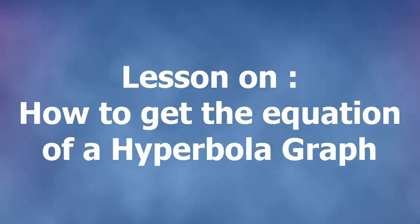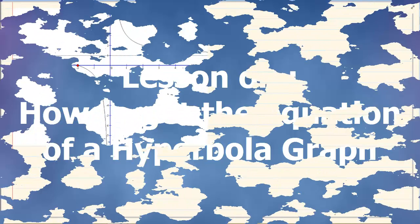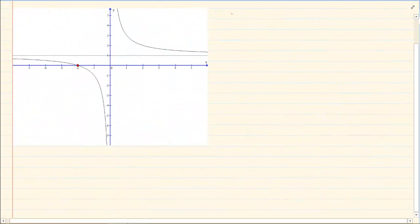Hi and welcome to my maths class. Today we're going to discuss how to get the equation of a hyperbola. The equation of a hyperbola is y = a/x + q, where q is your asymptote.